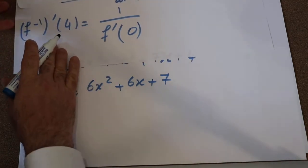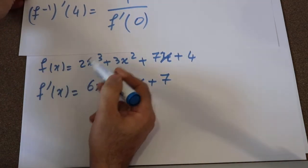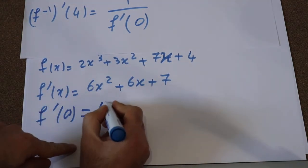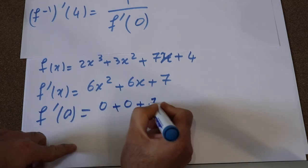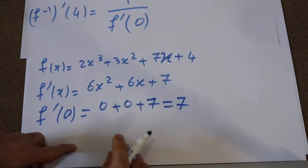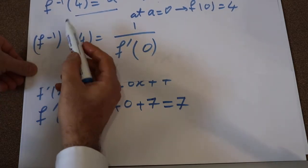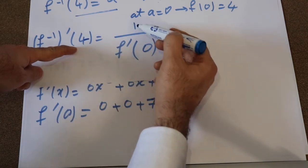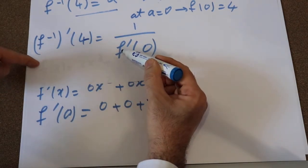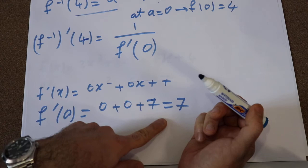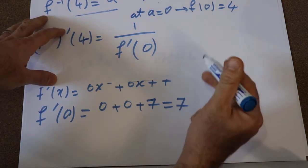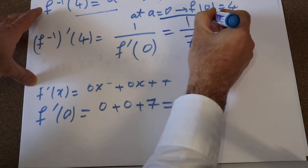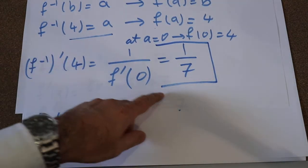So now all you need to do is calculate the derivative of this function at 0. Therefore, f prime(0) will be equal to 0 plus 0 plus 7, which is equal to 7. So therefore, the derivative of the inverse of this function at point 4 is equal to 1 divided by the derivative of that function at 0, which is 7. This gives us 1 divided by 7, and that is the solution to this question.